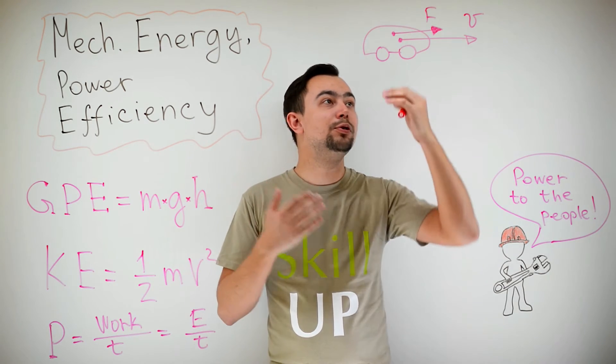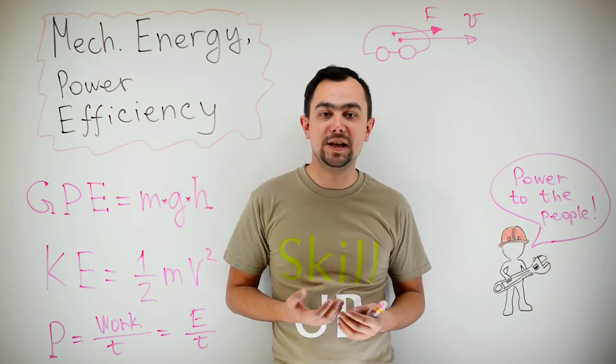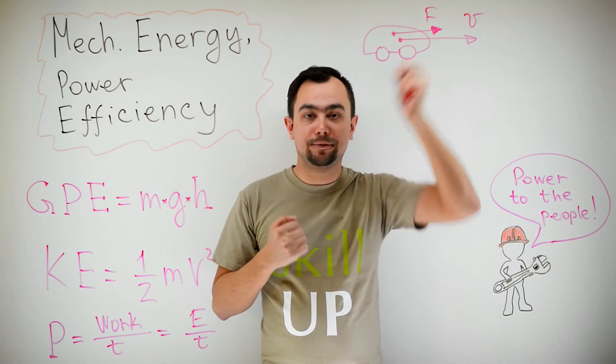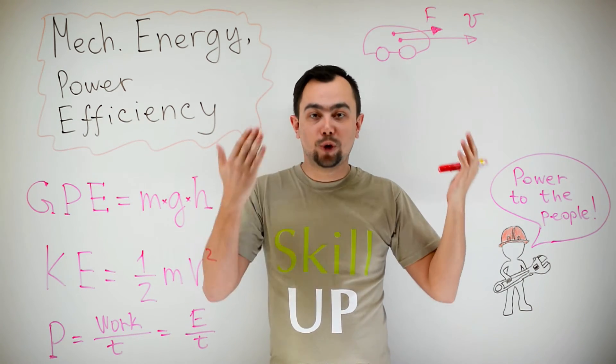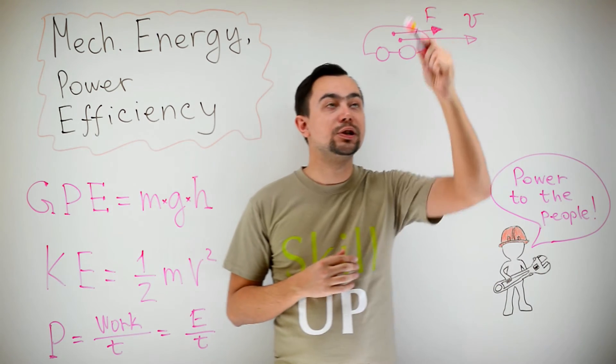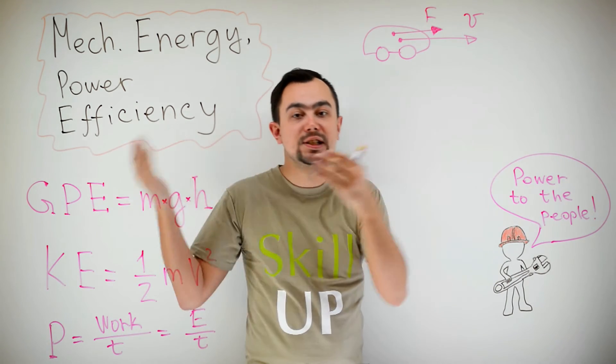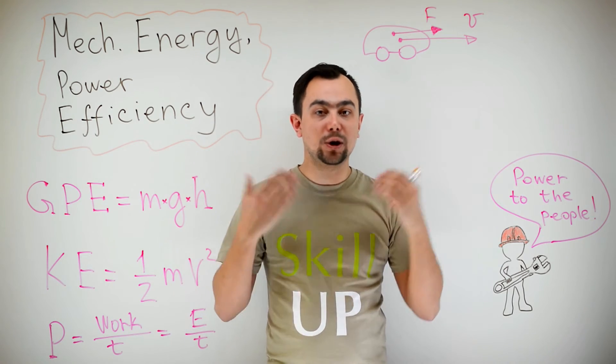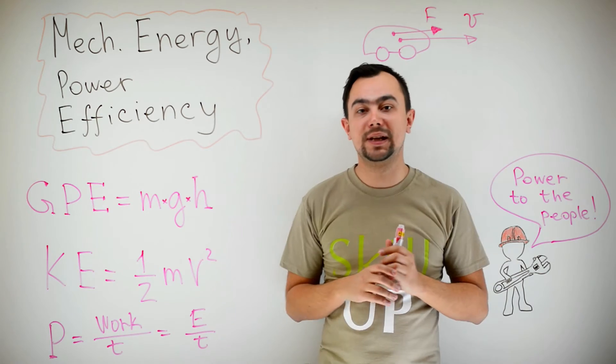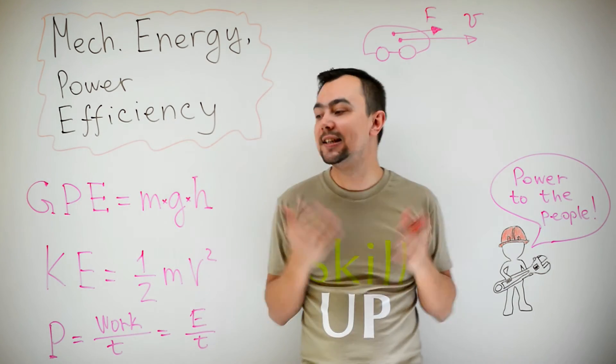Imagine a car moving along the road with speed V. The engine provides a pushing force F. Well, of course, if the car is moving with constant velocity, this pushing force is equal to the resistive forces on the car, according to Newton's first law. But let's consider the force from the engine and let's link it to power.